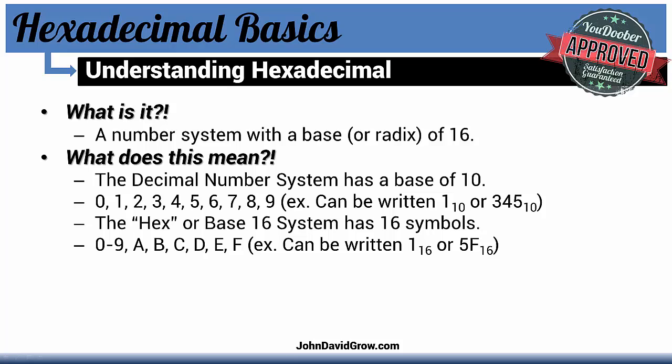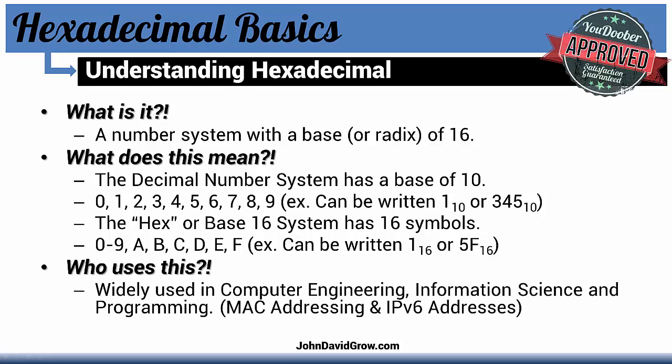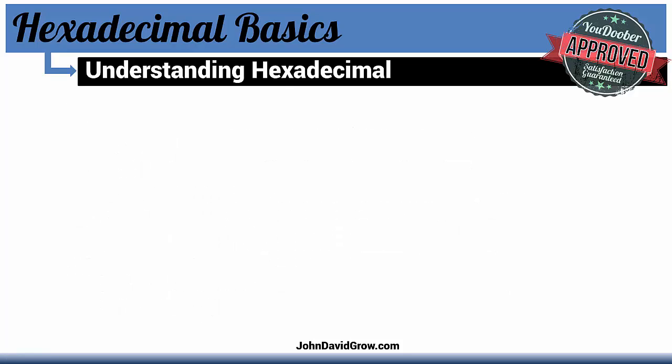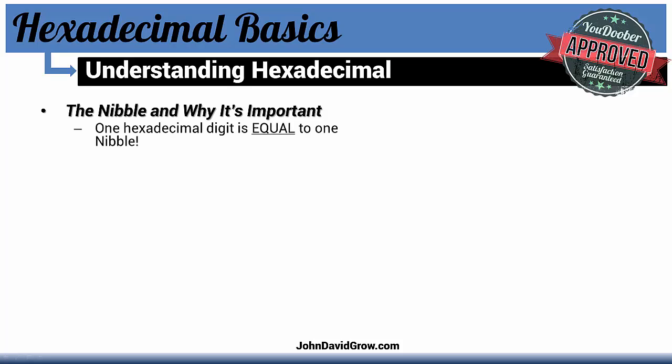Who uses this? It's widely used in computer engineering, information sciences, programming, and things like that. Now one important aspect about hexadecimal is the nibble. One hexadecimal digit is equal to one nibble. A nibble is half an octet, or a byte, and equals four bits.